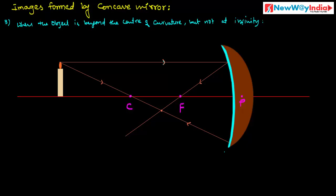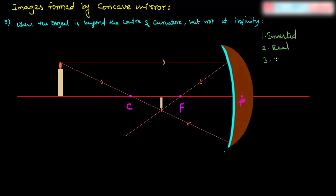The image is formed here. The characteristics of this image are: it is real, it is inverted, and it is diminished.